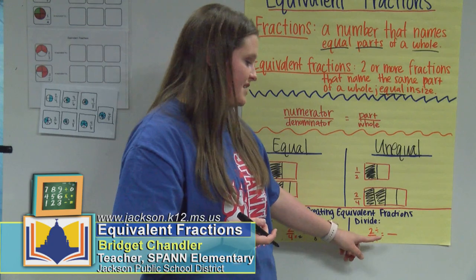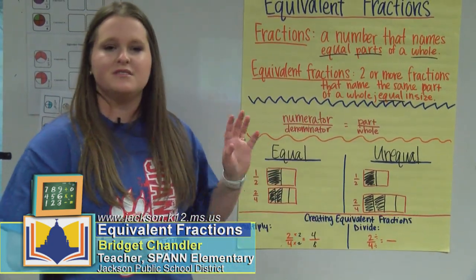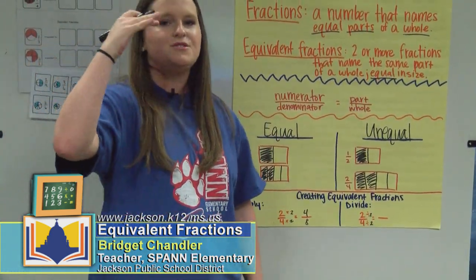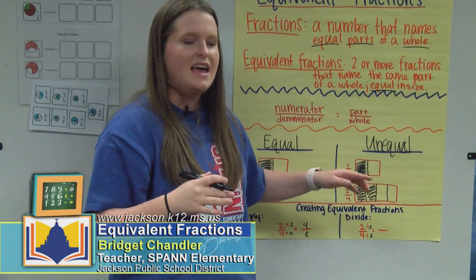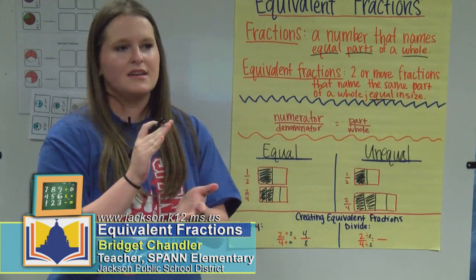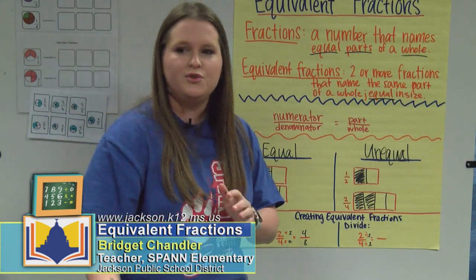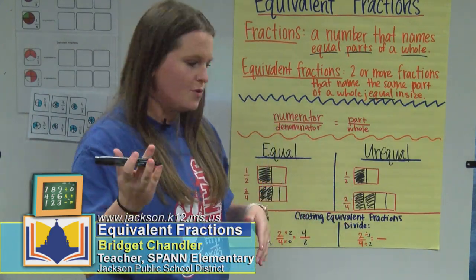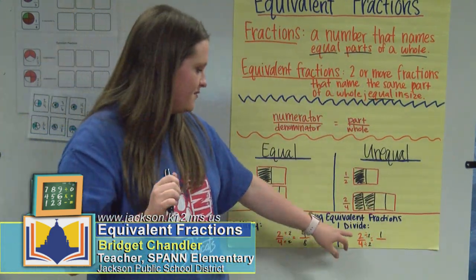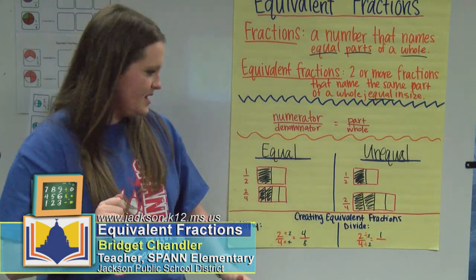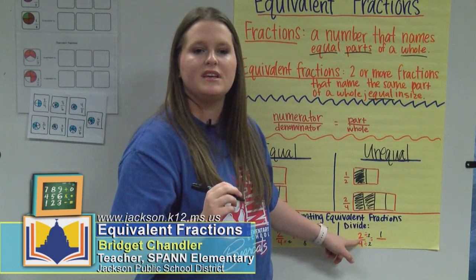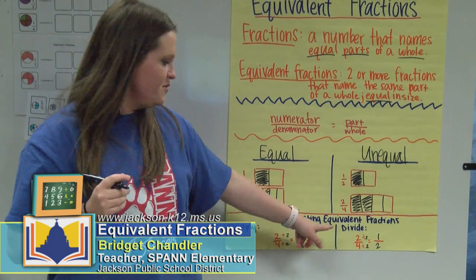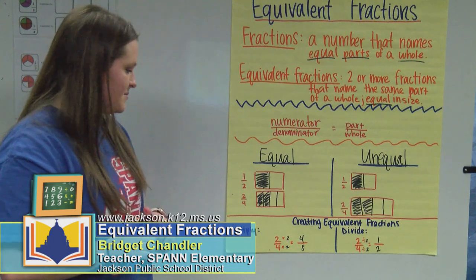Now let's divide two-fourths by two. Two divided by two and four divided by two — whatever I do to the top, I do to the bottom. If division is hard, just think: what can I multiply by two to give me two? That's one. So two divided by two is one. Then four divided by two — what times two gives me four? Two. So two-fourths is equivalent to one-half.